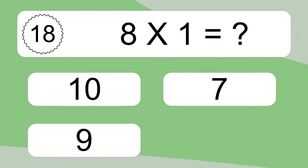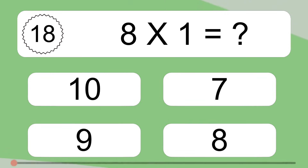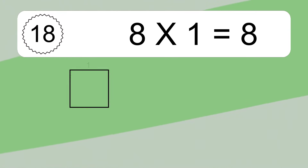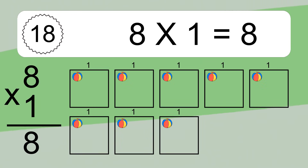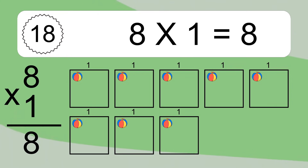8 times 1 equals what? 8 times 1 equals 8. We have 8 boxes and each box has 1 colorful ball inside. If you count all the balls in all the boxes together, you will have 8 times 1 balls. This equals 8 balls.